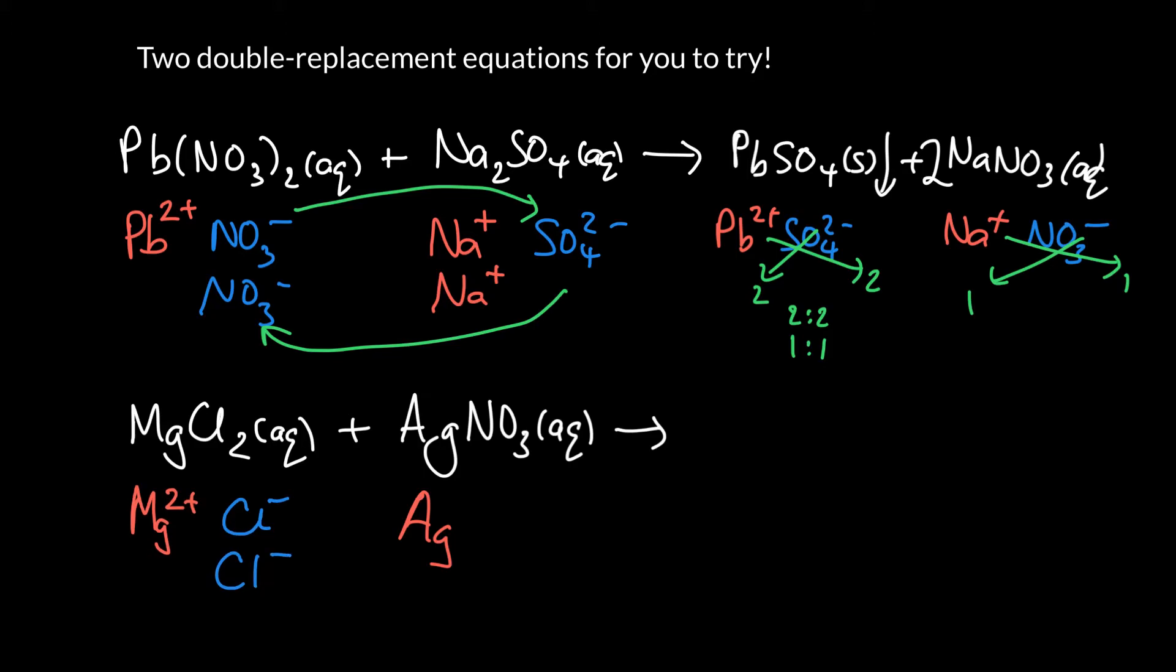And that makes sense because we need two of these to cancel out the charge on one of these. And the other ion is nitrate, NO3 minus. Uh-huh. If it's minus one, we know that the silver must be plus one. And actually, I believe silver is always plus one. So we probably could have just remembered that too.